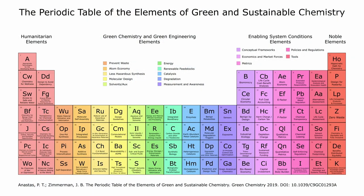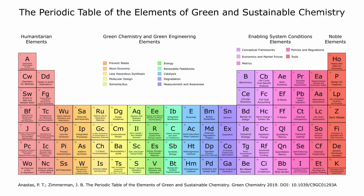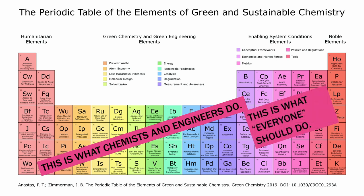The metaphorical periodic table of these elements includes not only the science and technology to get to humanitarian goals of sustainable food, water, and shelter, but also these enabling system conditions: economic investment, new research programs, new metrics, new ways of teaching, chemical footprint — in order to meet the noble goals of zero waste and life-compatible products and processes. This is what chemists and engineers do. This is what everybody should do, because we're going to need all of these aspects to get where we want to go.